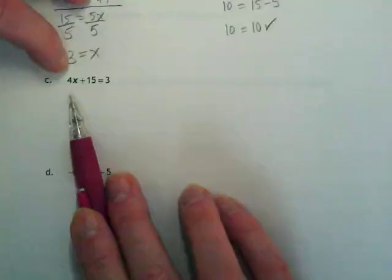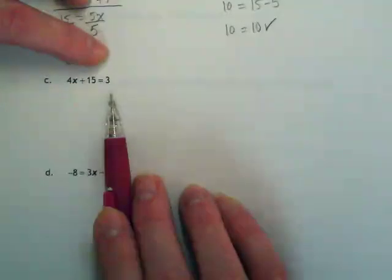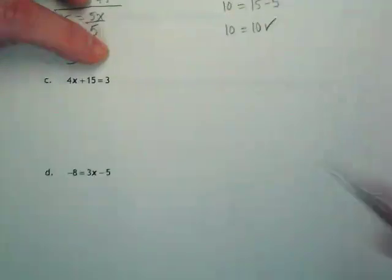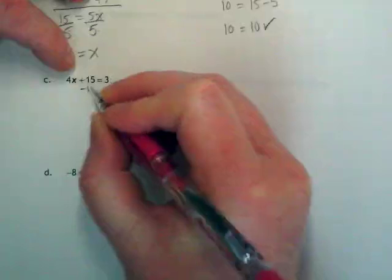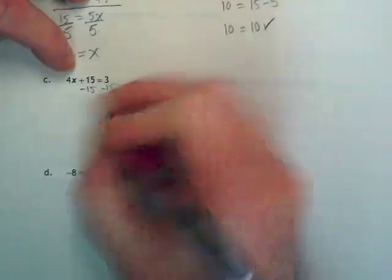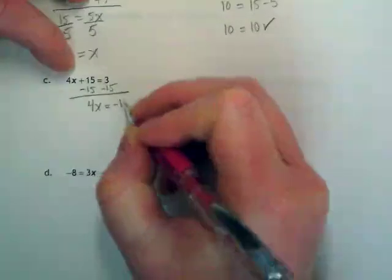We want to try to get the X by itself. 15 is a like term with 3 because they're both just numbers. They don't have any variable attached. It's a positive 15 or it's being added, so we're going to do the inverse operation which is to subtract it, and we end up with 4x is equal to negative 12.